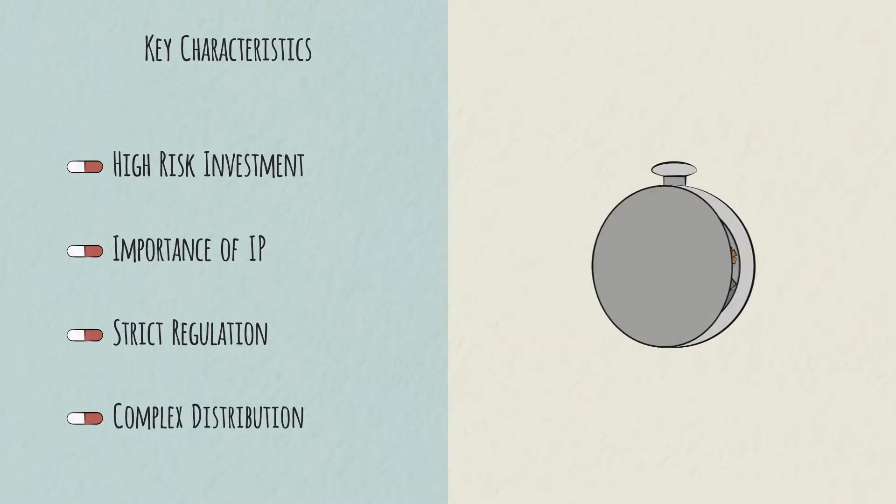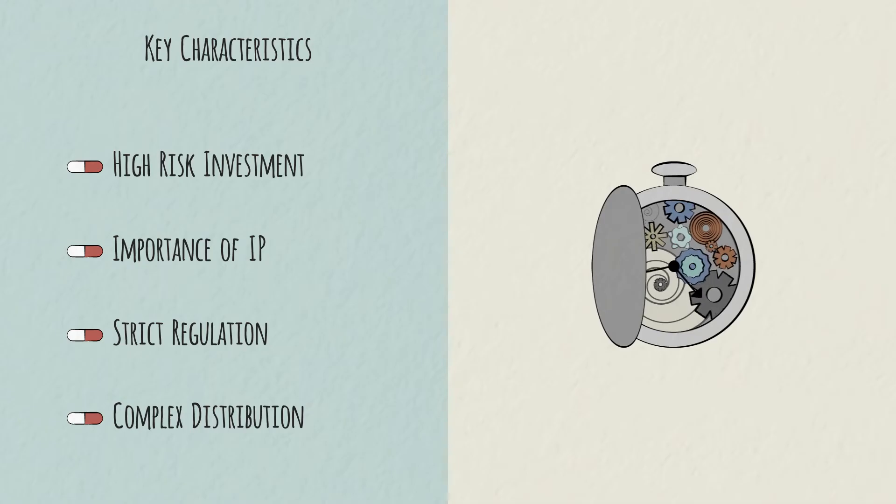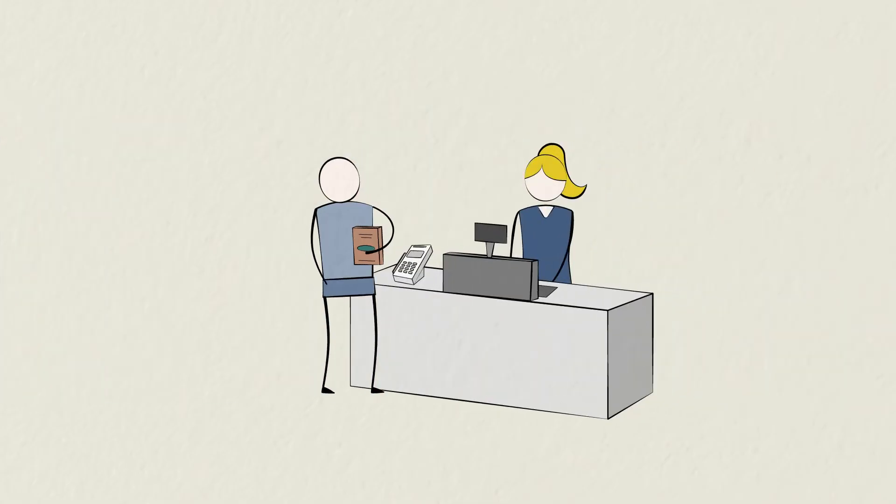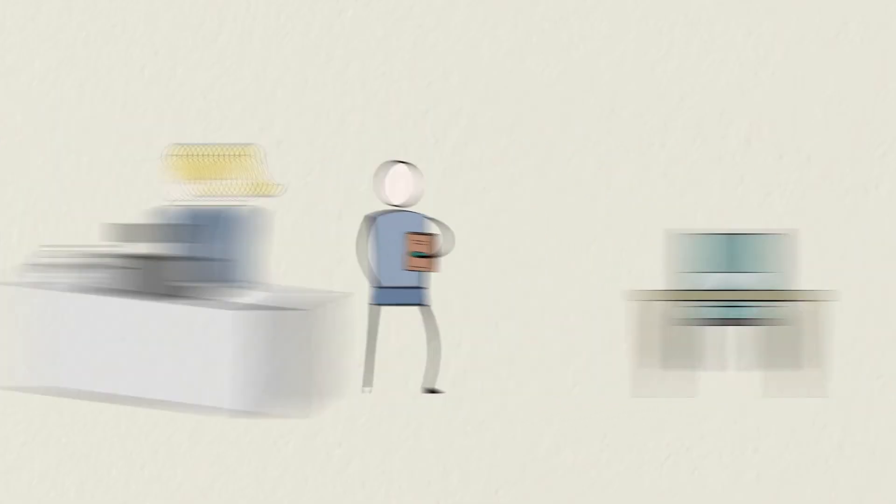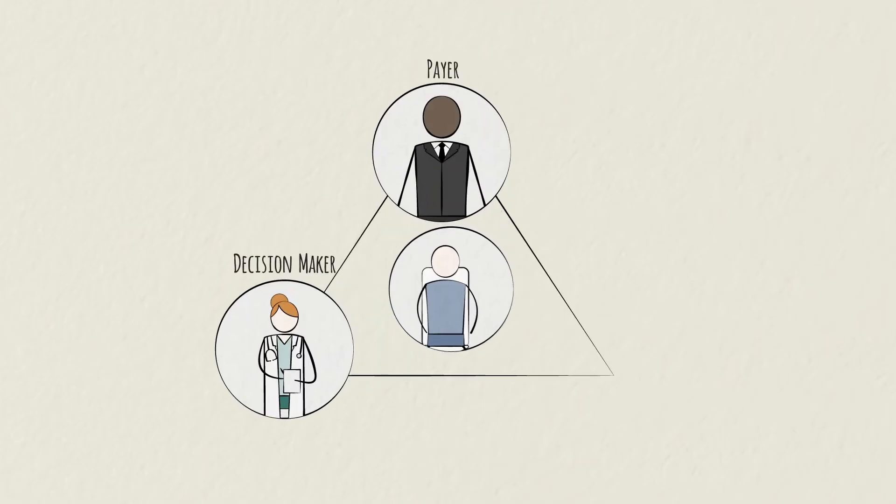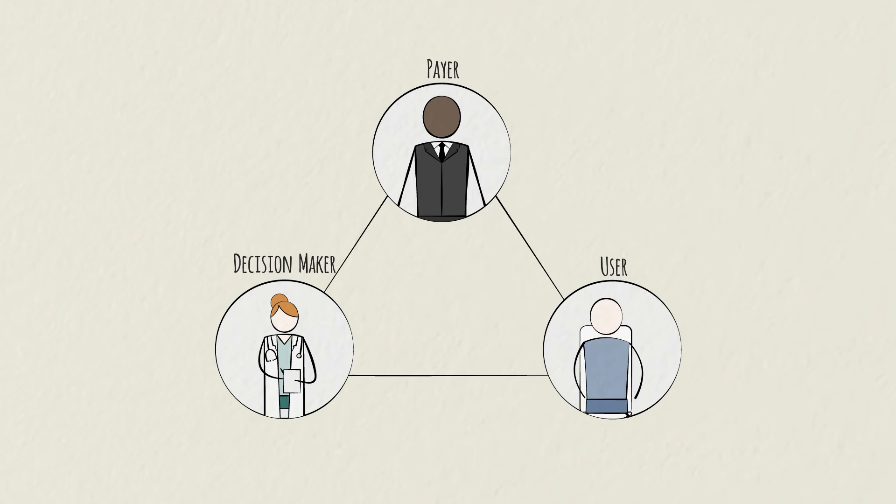And finally, reaching the end user is complicated. If you're just buying cereal, you can choose the brand you want, pay for it yourself, and have it whenever you like. But with a drug, the decision maker, the payer, and the user are often different people. A doctor decides who takes what, an insurer might pay for the drug, and the patient is the one who consumes it.